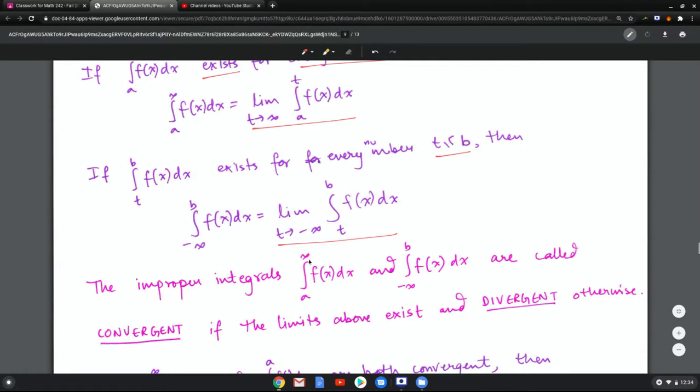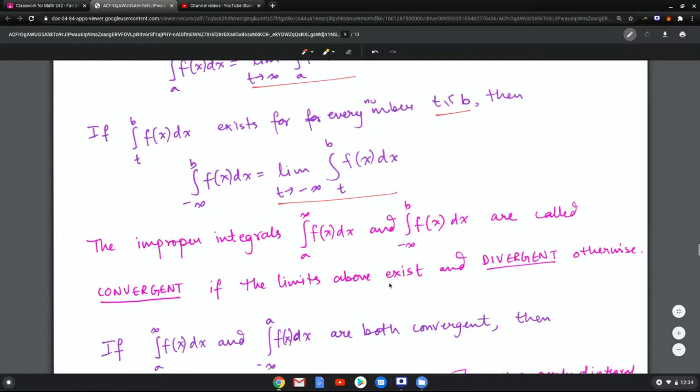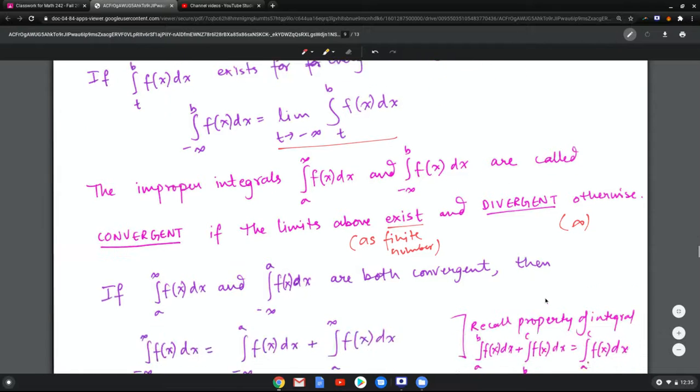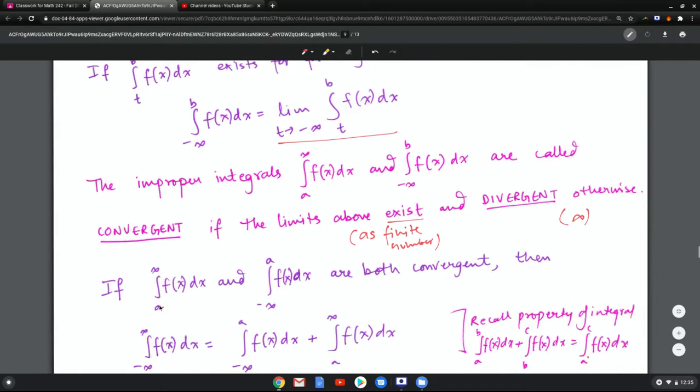Now the improper integral a to infinity f(x)dx and negative infinity to b, f(x)dx are called convergent if the limits above exist as finite numbers. Meaning if the limit is finite then it is convergent, and it is divergent otherwise, meaning it's infinite.